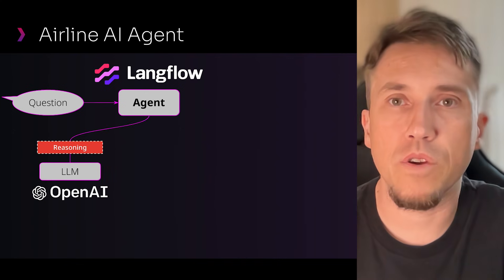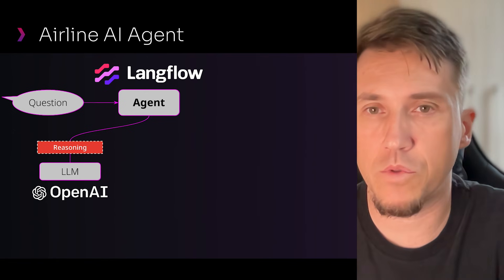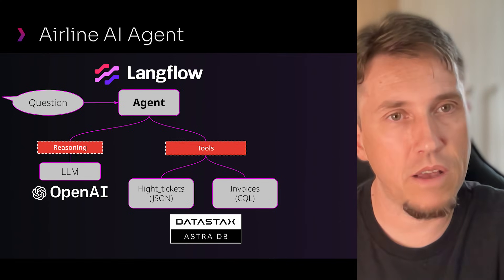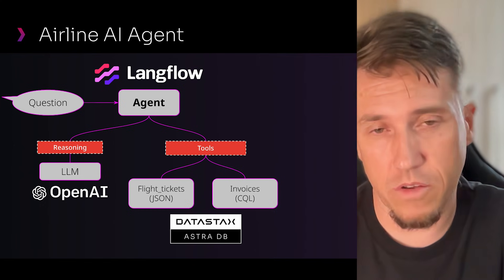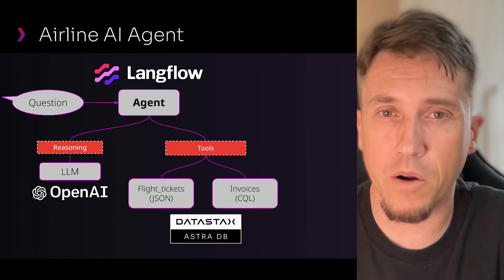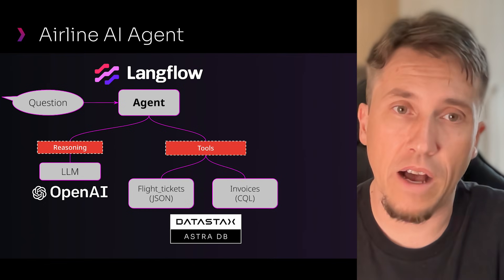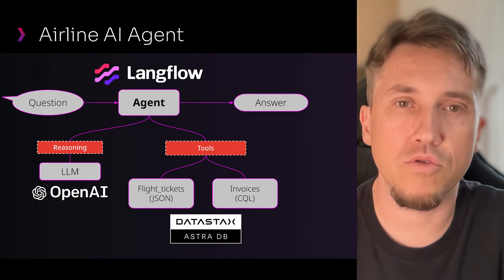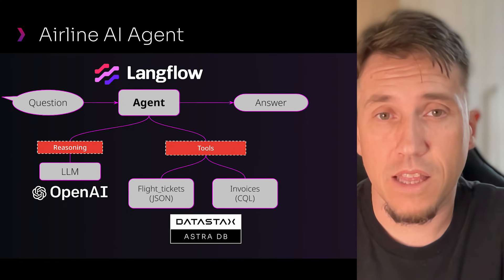We will build an airline AI agent. This agent will be built on Langflow, and we will use OpenAI GPT-4O and GPT-4O mini on the reasoning part — the LLM will decide which tool to use. On the tool side, we will have two kinds of data: flight ticket general information, and invoices stored on tables. Sometimes you will have lots of data to connect to your agent, so you need a very scalable and performant database, which is the role of Astra. We are using transactional data here, not RAG.